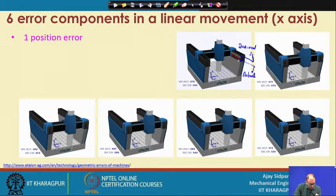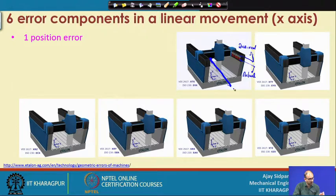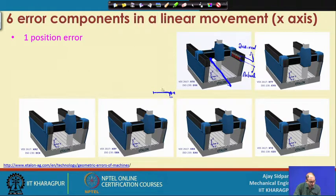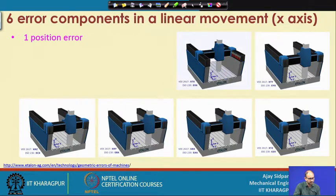Sometimes it is very easy to move, then suddenly you encounter a stick phenomenon — friction is very high and then sudden movement occurs. You are not able to move your x axis very uniformly. Suppose your target location is here — when you encounter the strip-slip phenomenon, because the distance is very small and friction is very high, you apply a little more force and your movement goes a little beyond the target. So that is the position error — you are not able to reach the intended location.